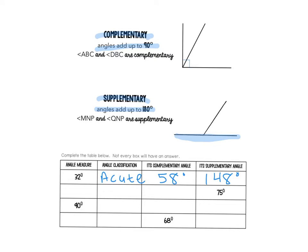On this next one, I have the supplement, which means I need to find the original angle measure. So 180 minus 75 tells us that the original angle measure is 105 degrees. We're only classifying the original measure, and 105 degrees would be an obtuse angle because it's bigger than 90. Since the angle is 105, we would not have a complement here because it's already bigger than 90, so none.